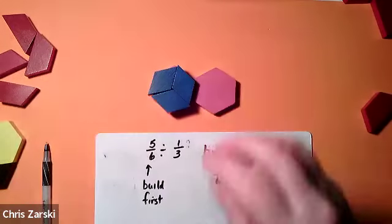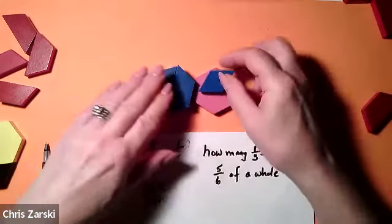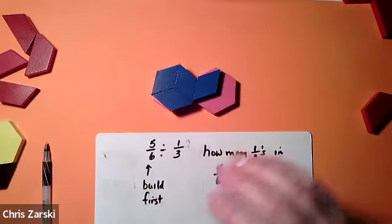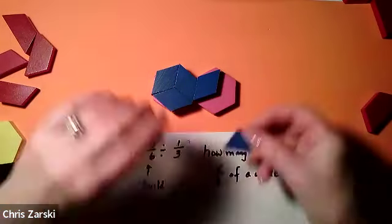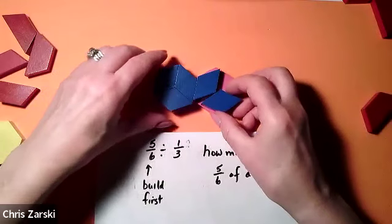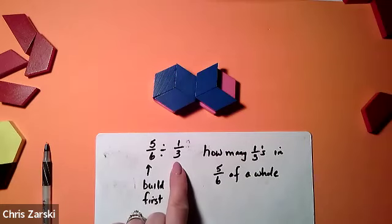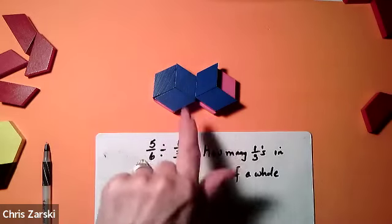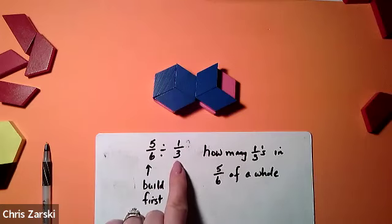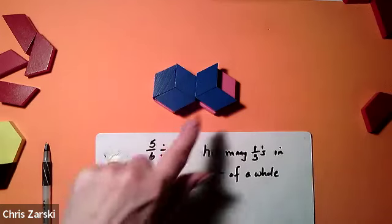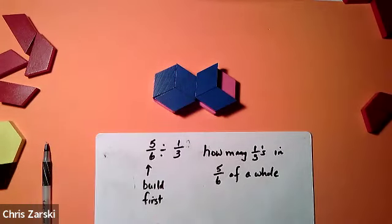So get your blues out. Okay. So I have five sixths of the whole, which I can see there. When it says divided by one third, what you're asking them is how many thirds, and we know what shape are the thirds, the pink, the chevron. How many thirds will fit into these five sixths? That's what the question is asking them.